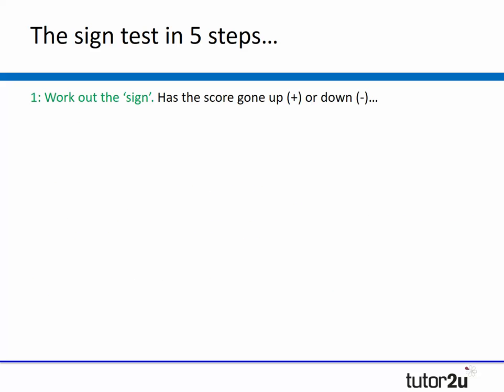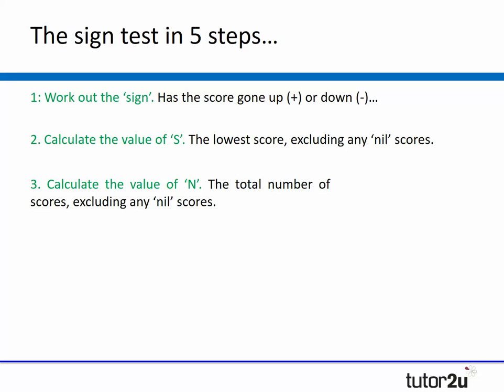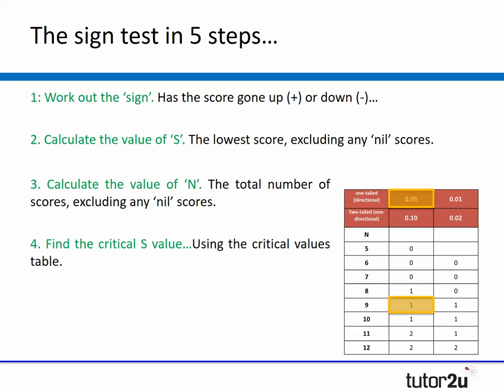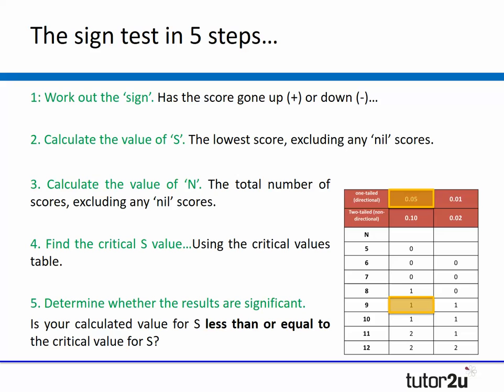Just to recap that in five steps: firstly you work out the sign, you put in the pluses and the minuses. You then calculate the value of S, which is the lowest score excluding any nil scores. You then calculate the value of n, which is the total number of scores all together, but again excluding any nil values. Fourthly, if you're asked to find the critical value of S, you'd need to use the critical values table. And then last of all, determine if the results are significant, so whether the calculated value is less than or equal to your critical value. There's the sign test in five simple steps.